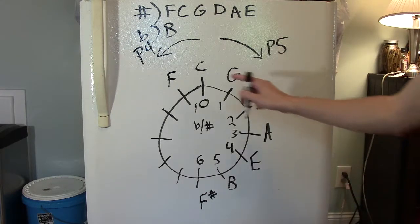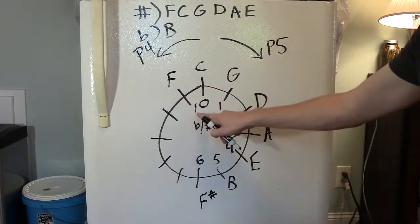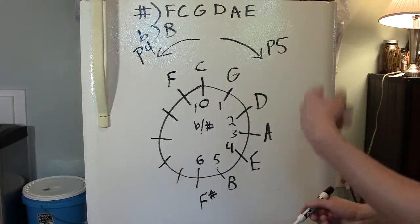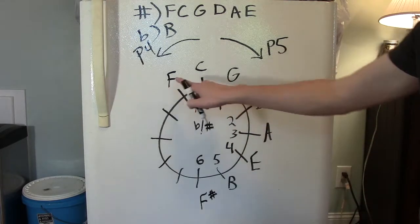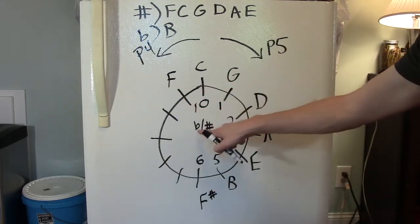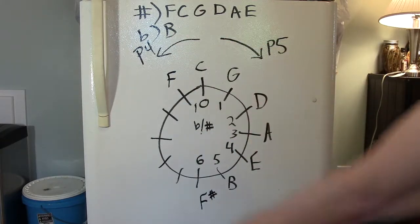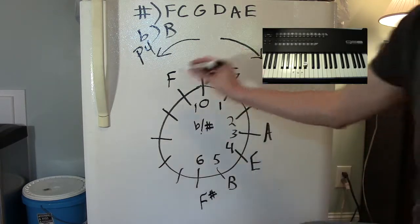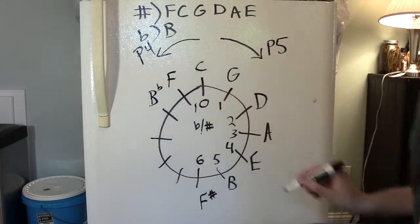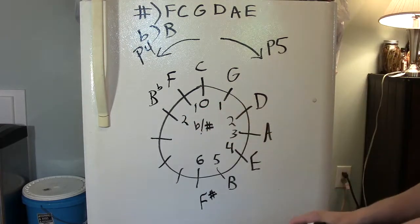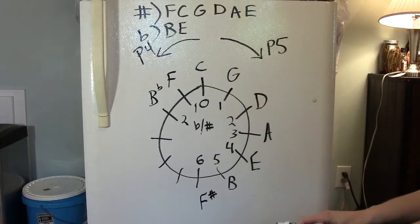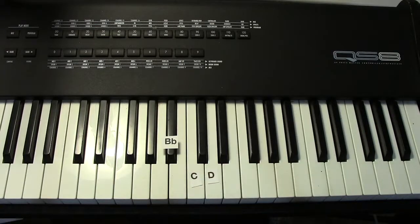Now, before we go up a perfect fourth from F, it's really important to remember that F major has one flat in it, and that's B flat. It's so important, I'm going to say it again. Remember that F major has one flat in it, and that is B flat. Let's go up a perfect fourth. And we arrive at our next key, B flat major. B flat has two flats in it. They are B flat and E flat.